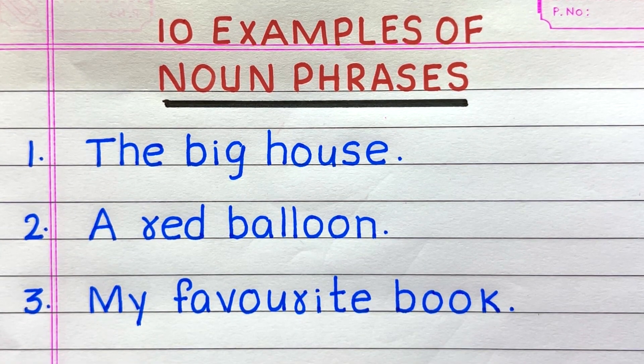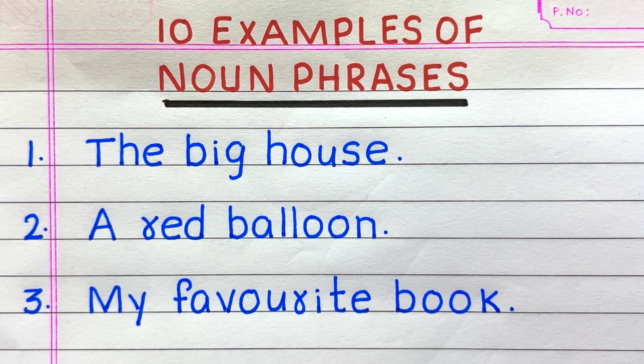The first example of a noun phrase is 'the big house'. Second: 'a red balloon'. Third: 'my favourite book'.